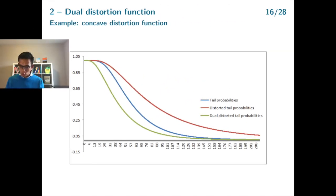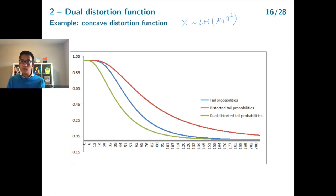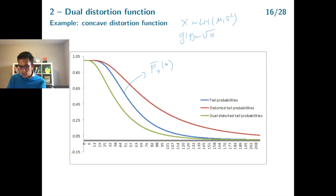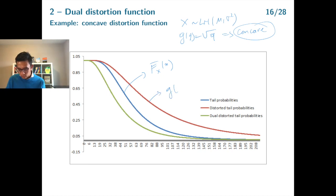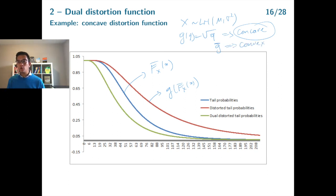In this example, we have a lognormal random variable x with parameters mu and sigma squared — the same lognormal random variable as previously. The blue line is the tail function of the lognormal random variable. The distortion function g(q) is the square root function, which is a concave distortion function. A concave distortion function increases the tail probability, so the red line is the distorted tail function. Because the distortion function is concave, the dual distortion function g-bar will be convex. Applying a convex function on the tail function results in a decrease of the tail probability, so the green line is the dual distorted tail function.